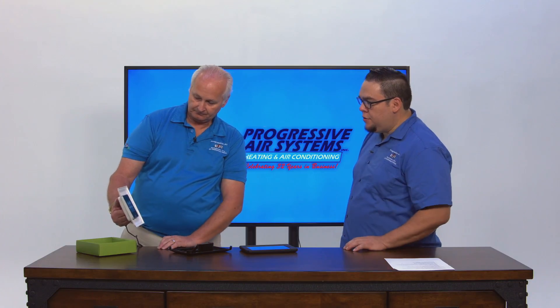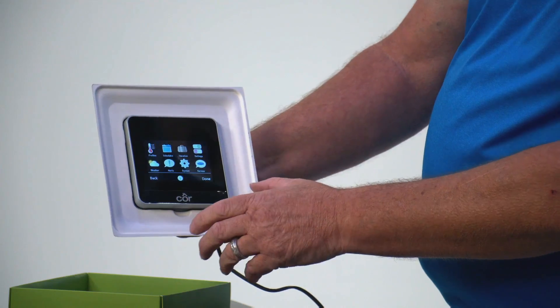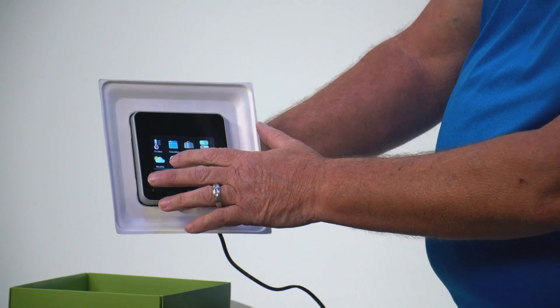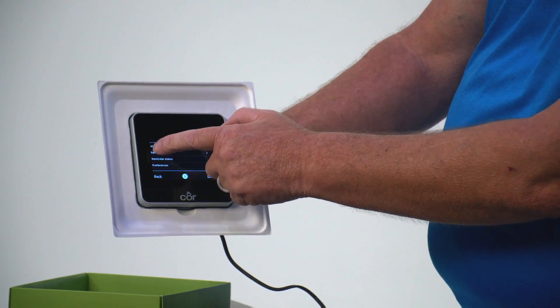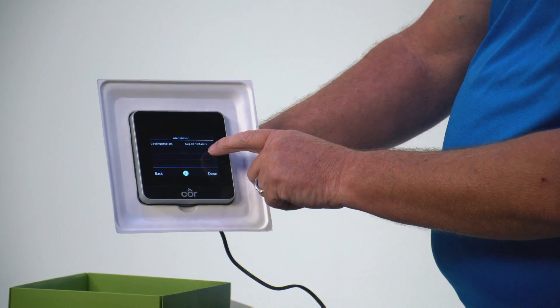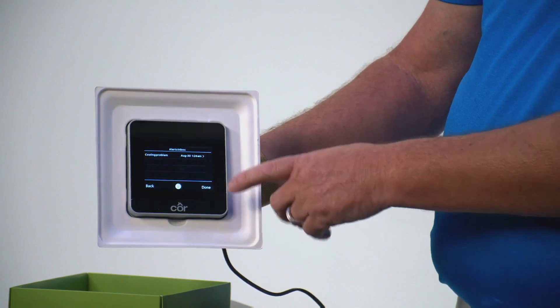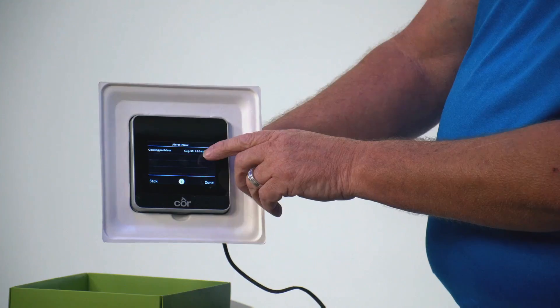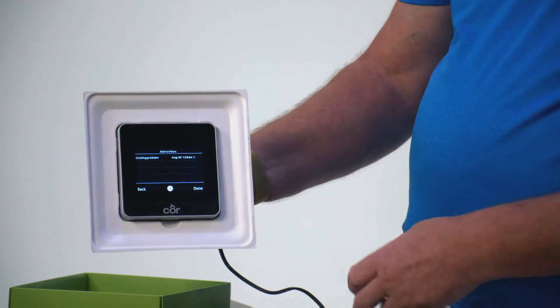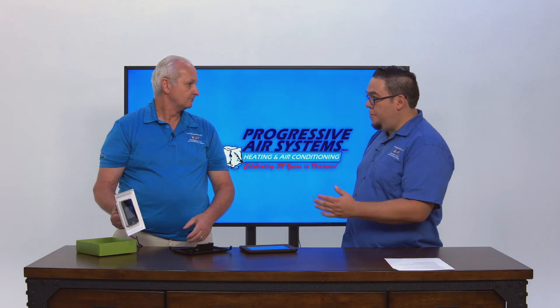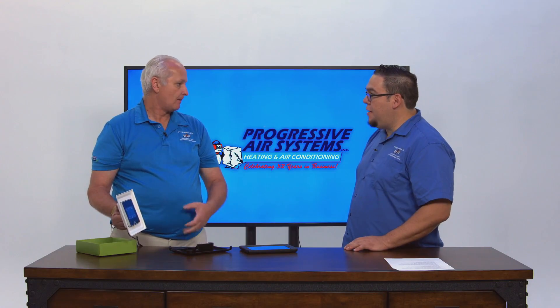Now, you've got an alerts feature there. What does that do? The alerts feature - let's see if we have anything in the inbox here now. Basically, the alert feature is telling me that I had a cooling problem on this day, on August 30th at 1:26. So that's a red flag for me to call Progressive Air, have them come out and look at my unit.